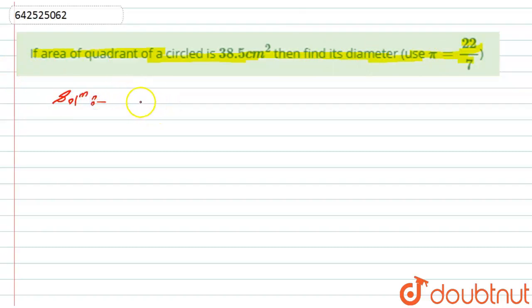First of all, what is given to us? We have given area of quadrant circle. Now if I draw a circle, this is a circle, and quadrant circle means this much portion.